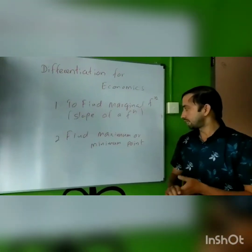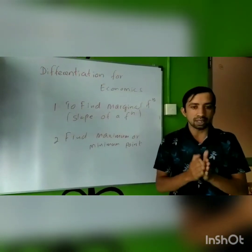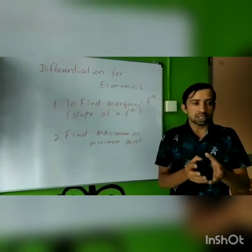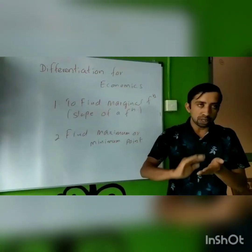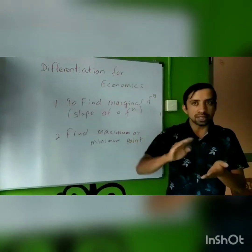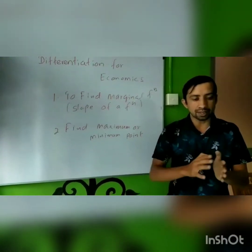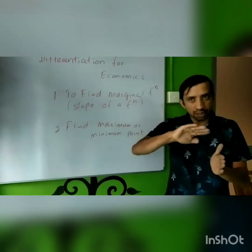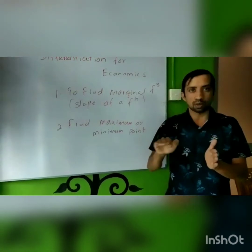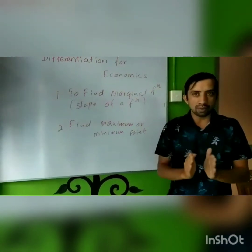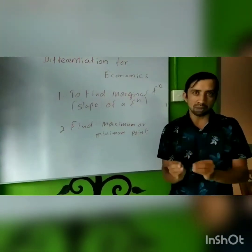The second use is about finding maximum or minimum points. As already mentioned, the first derivative gives the slope. At a maximum or minimum point, the slope should be zero. Based on this, we can understand that when a curve moves upward and then starts to move downward, the middle point — where slope becomes zero — should be the maximum or minimum point.